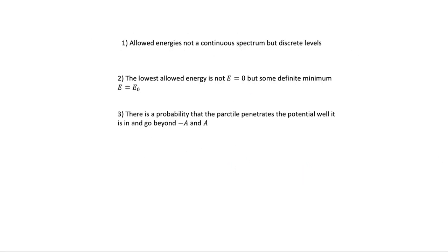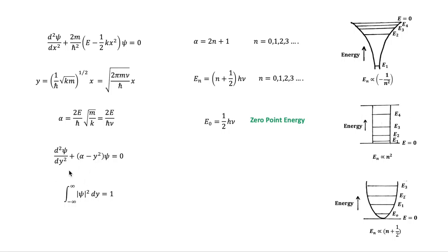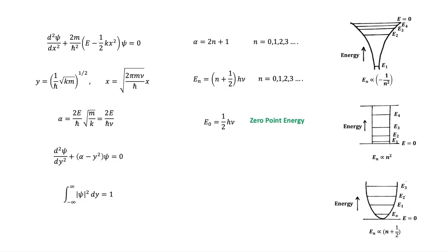For the wave function to represent an actual particle, it has to satisfy the normalization condition. If we substitute for ψ in this normalization condition, it is fulfilled when α = 2n + 1 and n is an integer equal to 0, 1, 2, etc.